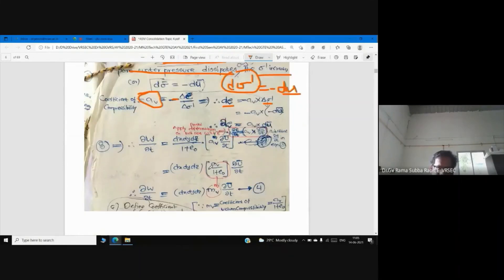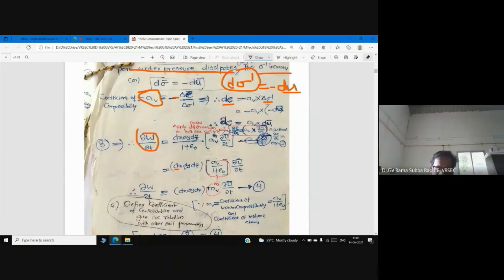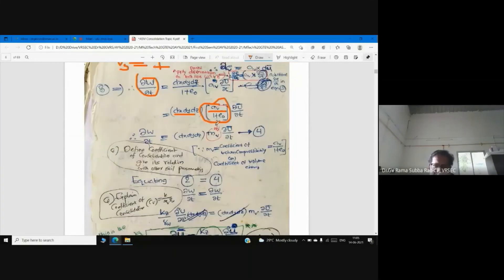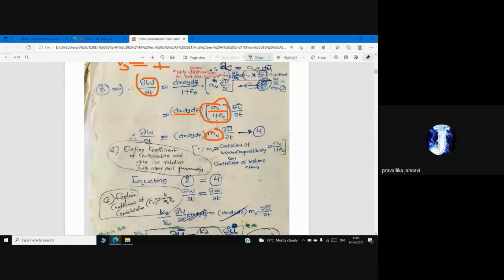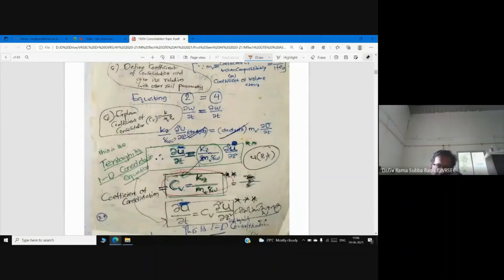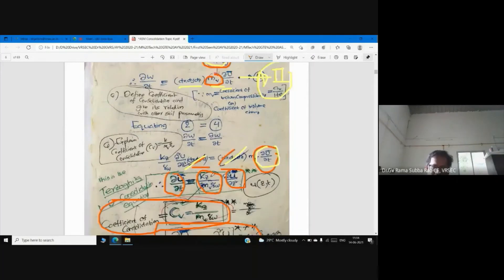So now you can see ∂w/∂t equals dx dy times... what is av/(1 + e₀)? mv, the coefficient of volume compressibility. k/γw times ∂²u/∂z² times dx dy dz equals dx dy dz times mv times ∂u/∂t. Cancel dx dy dz, the volume of the soil element. Now what is k/(mv γw)? ∂²u/∂z² equals... what is k/(mv γw)?